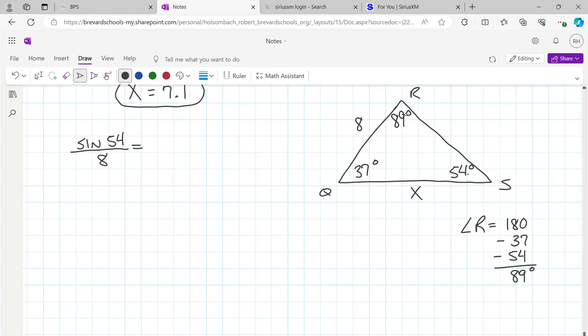So the second part of our proportion is going to now be sine 89 over x. Cross-multiply: sine 54x equals sine 89 times 8, and then divide both sides by sine 54. The sine 54s cancel, x falls down, and we got 89 sine times 8. Make sure you hit the equal sign, then divide by 54 sine and hit equals, and I got 9.9.